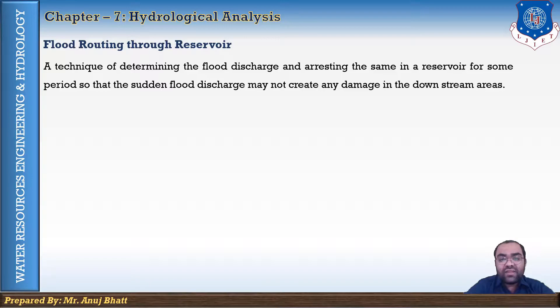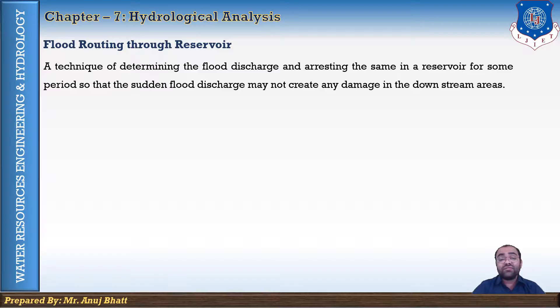Flood routing is a technique used for flood control. By flood routing, the maximum water level in the reservoir can be determined by studying the past rainfall records and the previous flood hydrographs. By flood routing, the peak flow at the upstream side of the reservoir is controlled in such a way that the flow at the downstream side is reduced to safe discharge.